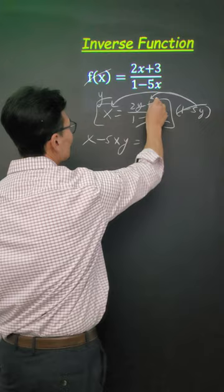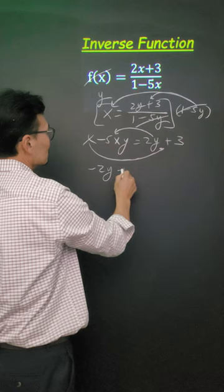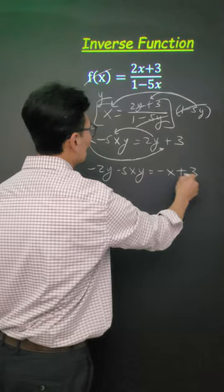Next, to solve for y once again, bring everything with y to the left side, anything without y to the right side, then take out the y.